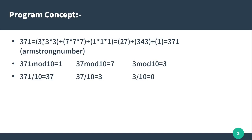For example, take 371. First, 3 is cubed, so 3×3×3. If you add the cube of each digit, you can build the Armstrong number. 2 will be cubed next.